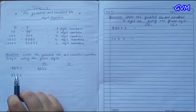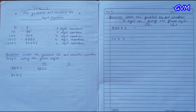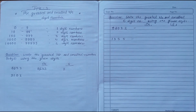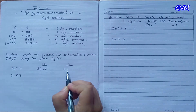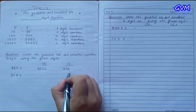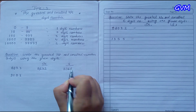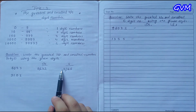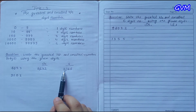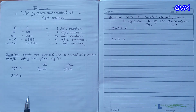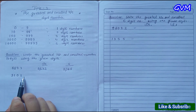For the smallest number, we will write these numbers in ascending order — from smallest to greatest. So first write 2, then 3, then 6, and at the last 8 on the right side. Put a comma, and here we have the smallest number: 2,368.